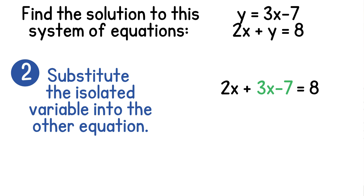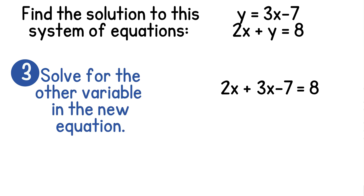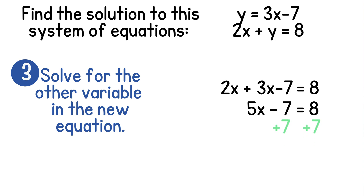So we have 2x plus 3x minus 7 equals 8, and now we only have one variable in the equation. So we can do step 3, which says to solve for this variable. We'll start by combining like terms — 2x plus 3x — which gives us 5x minus 7 equals 8. Now we can solve for x. We'll start by adding 7 to both sides, which gives us 5x equal to 15. Now we'll divide both sides by the coefficient of 5 and get x equals 3.